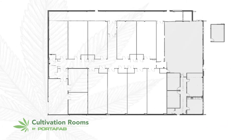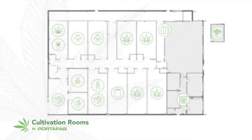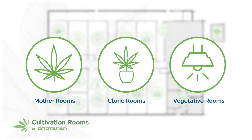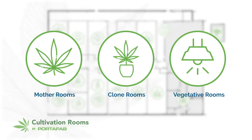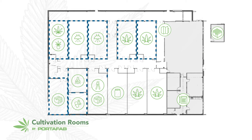In a cannabis facility, there may be many rooms classified as grow rooms, including mother rooms, clone rooms, and vegetative rooms. Each room is segmented or partitioned off so that its environment can be tailored to the exact conditions ideal for its phase of the process.